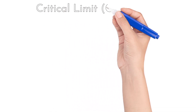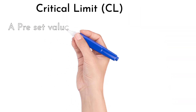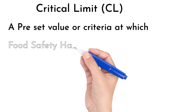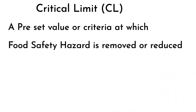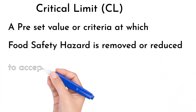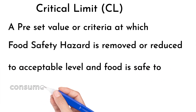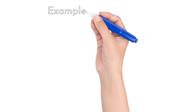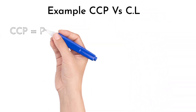Now we define the critical limit. A critical limit is a preset value or criteria at which a food safety hazard is removed or reduced to an acceptable level and food is safe to consume for humans.